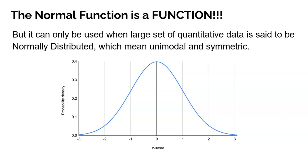The normal function is a function, but it can only be used when a large set of quantitative data is said to be normally distributed, which means it's unimodal and symmetric. When working with data that follows the normal model, there are a couple of things that are super important: the mean, which completely dictates the center of your model, and the standard deviation, which measures how much your data spreads — how far your data is from the mean.